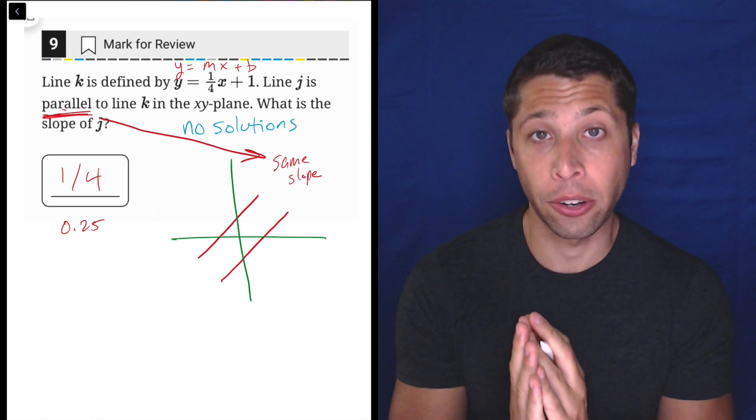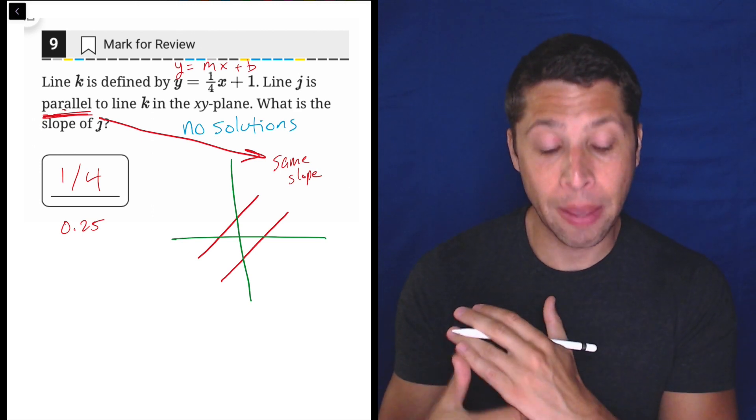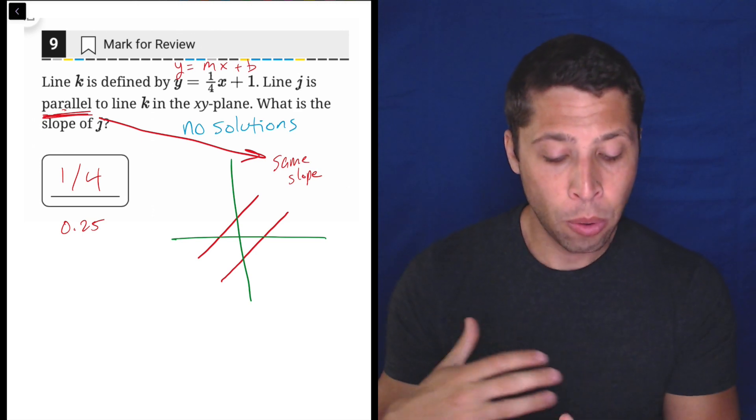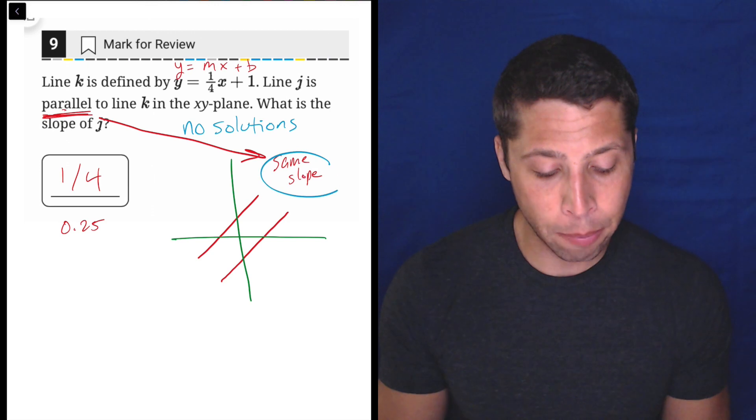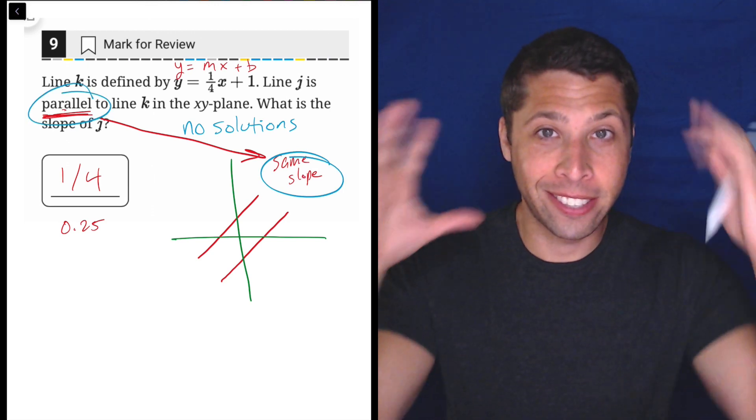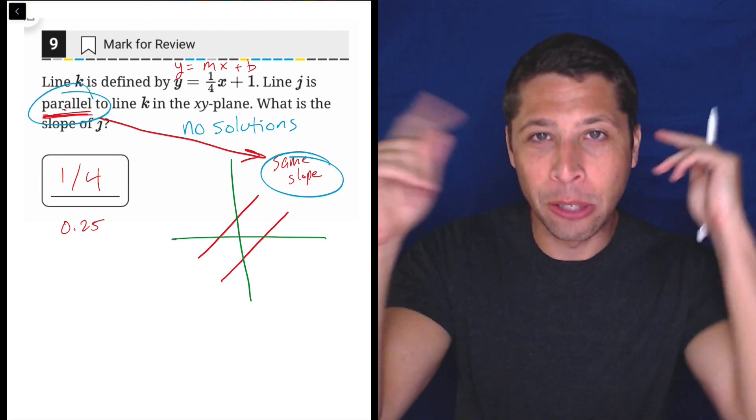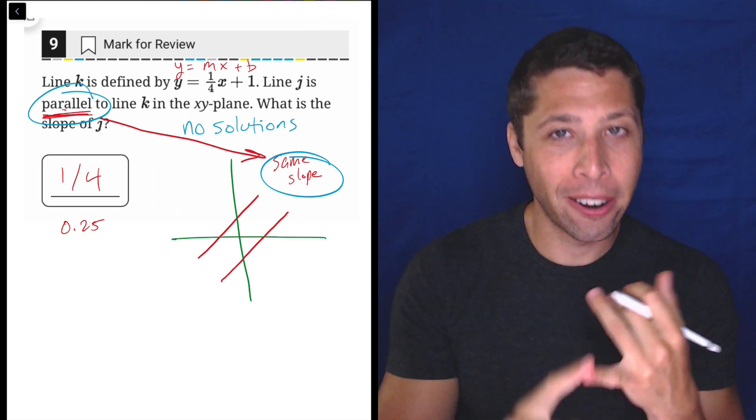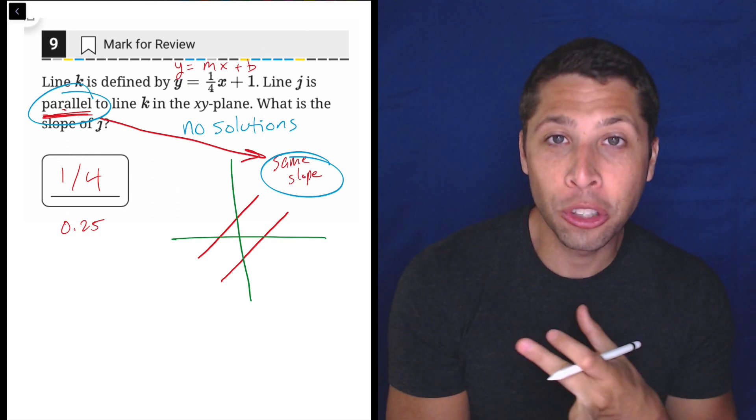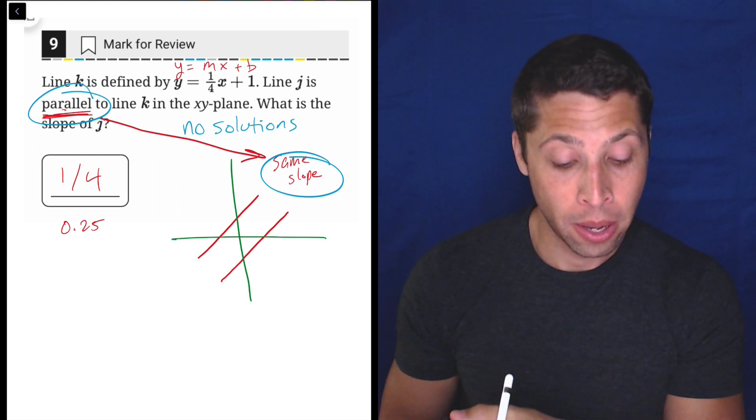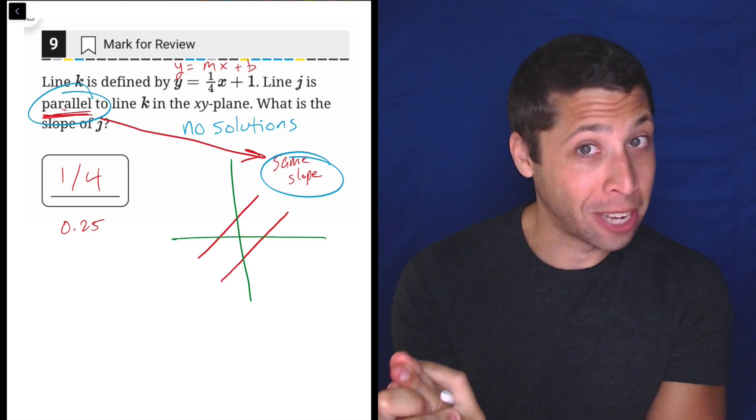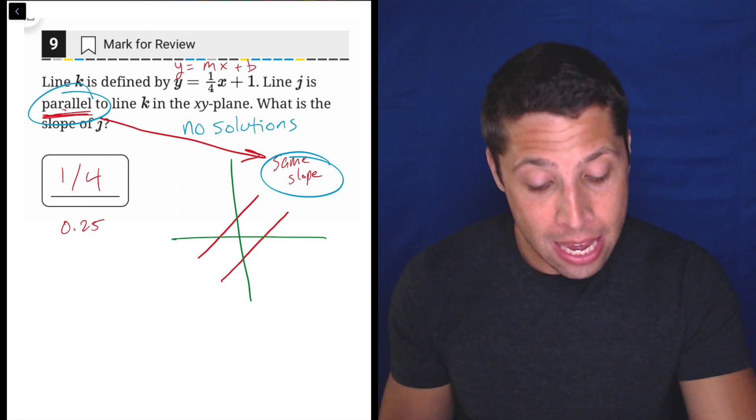So they never can intersect. So all three of these words need to kind of be in the same part of your brain, right? Wherever you store this information. Parallel lines have no solutions and they have the same slope. They will have different y-intercepts, okay?